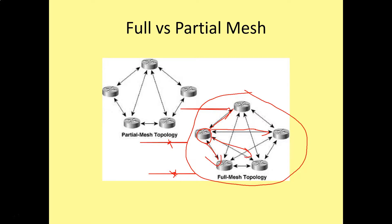Whereas with a partial mesh, you can see this one is connected to two. And this one is connected to two as well. This one is connected to three. So you can see it's not quite a full topology.